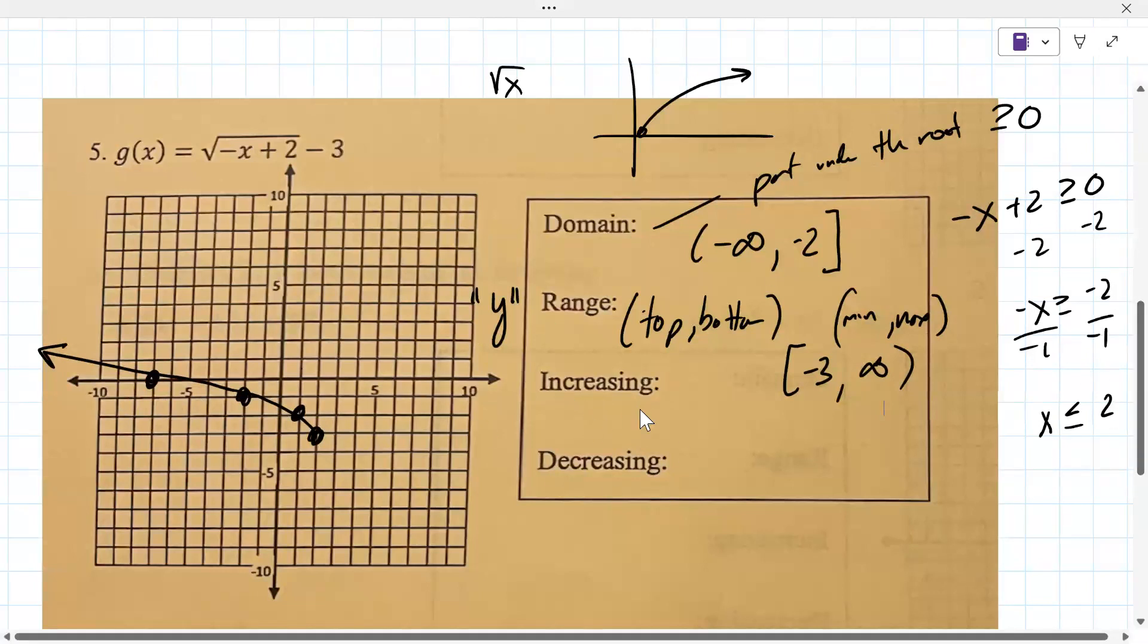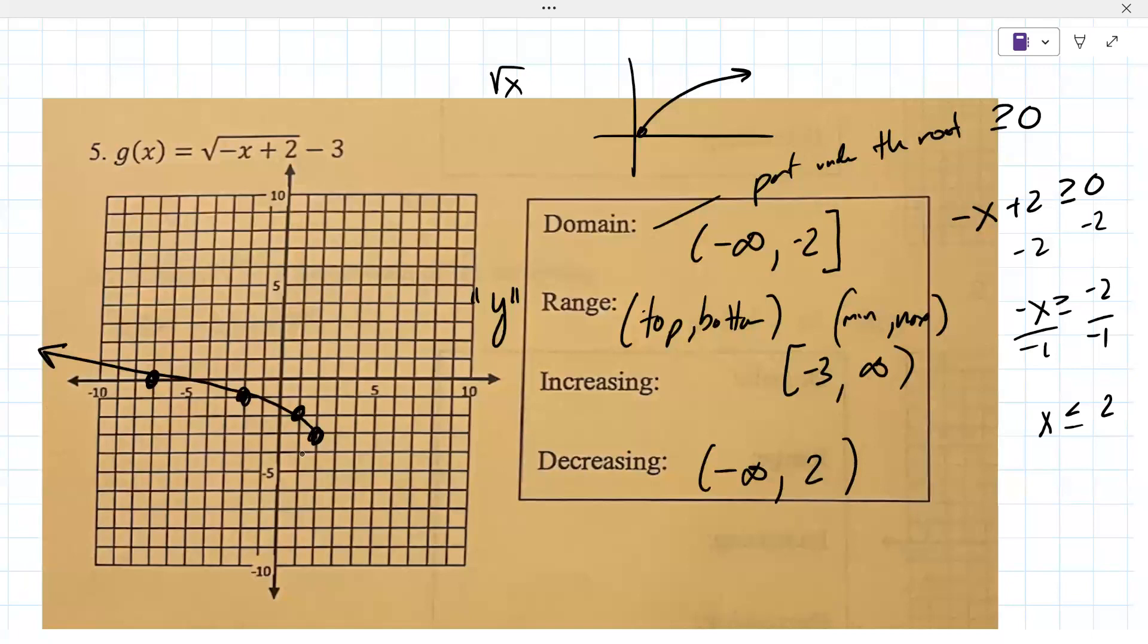Increasing again, is it going up and to the right? No, but it is decreasing everywhere on its domain. So it's decreasing from minus infinity through 2. Where did the 2 come from? Oh, sorry, negative 2. It comes from the domain.